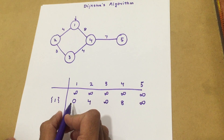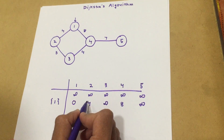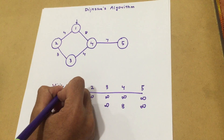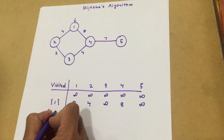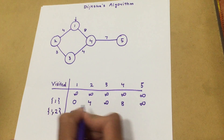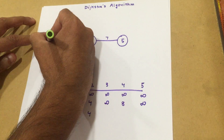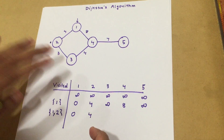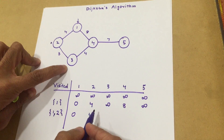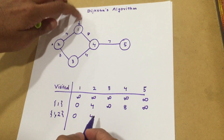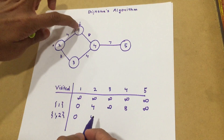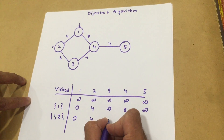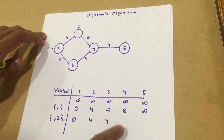Now we look at this row: zero, four, infinity, eight, infinity. The minimum distance is four. Since we have already visited one, the next node we visit is node two, which has the minimum distance of four. So in the visited column, we mark two as visited. The distances for one and two remain zero and four respectively. Now I am at two — two is connected to one and three. Since one is already visited, we only look at node three. Since we started from the root node, we check the distance of three from one: four plus three equals seven. So that infinity changes to seven.